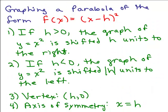Let's summarize this. If we're graphing a parabola of the form f of x equals x minus h squared, notice there's a minus sign in front of the h. If you had x plus 3, you could think of that as x minus a negative 3. So if h is positive, like x minus 3, then the graph is shifted h units to the right. If it was x minus 3, it would be 3 units to the right.